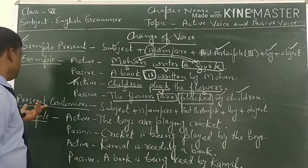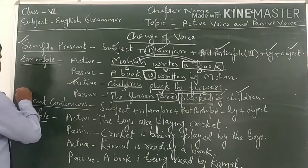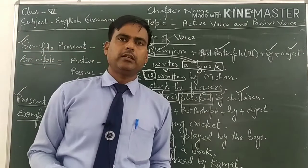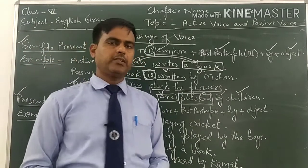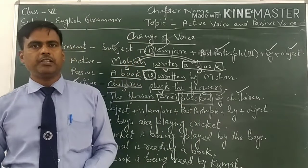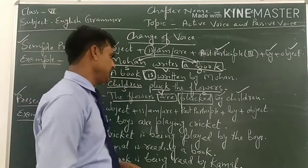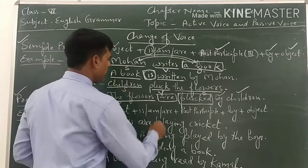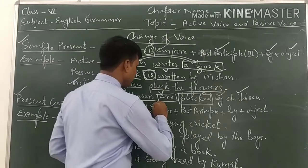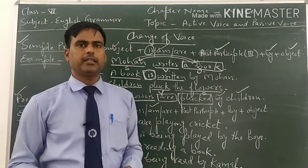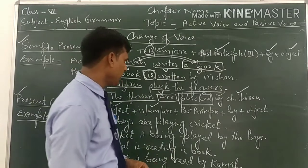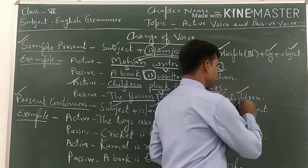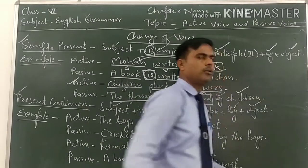Now come to the changing rule of present continuous tense. When we change a sentence from active voice to passive voice in present continuous tense, first we write the subject, then is/am/are according to the subject, then 'being,' then the past participial form of the main verb, then 'by agent,' and finally the object.